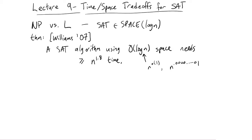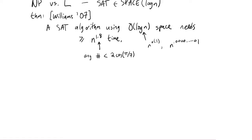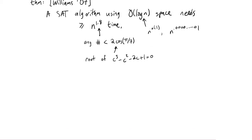What's the deal with this 1.8? Actually, this can be any number less than 2 cos(π/7), which is slightly bigger than 1.8. That's just a funny way of phrasing it. If you really look at the proof, where this number comes from is it's just a solution of the cubic equation c³ − c² − 2c + 1 = 0. That little cubic equation comes up somewhere in Williams' work, and that's where the funny number comes from.